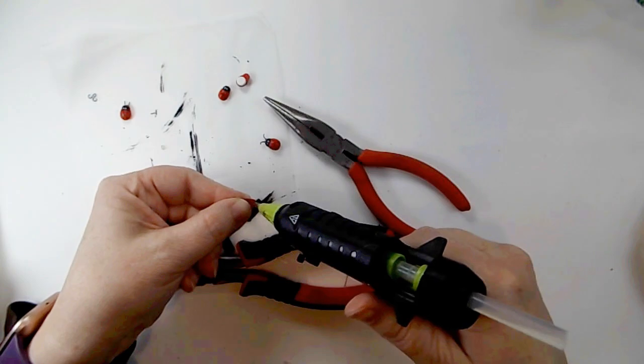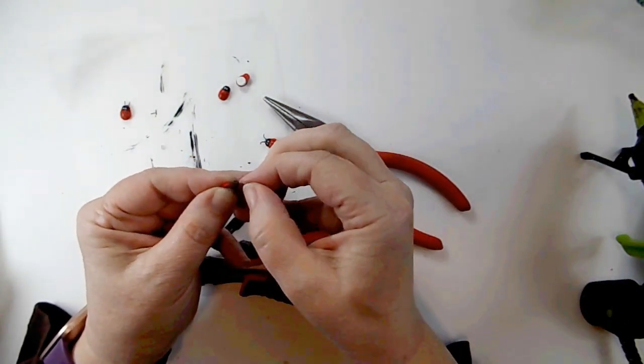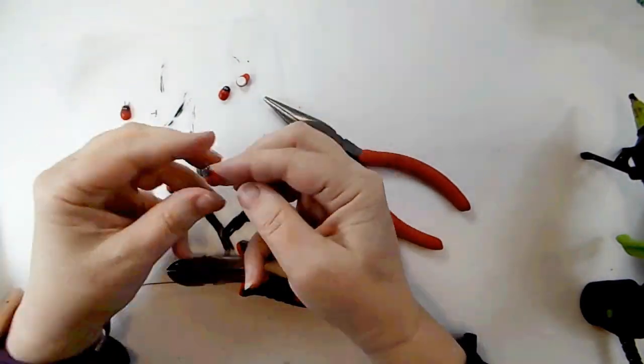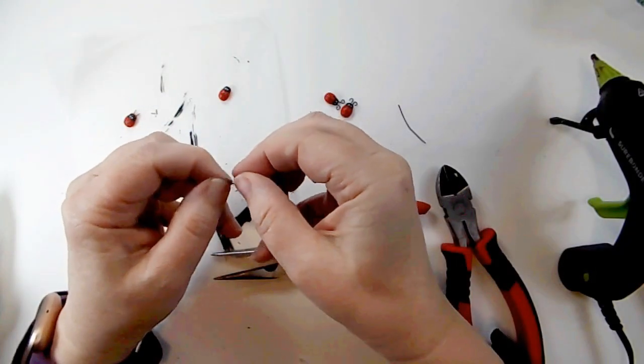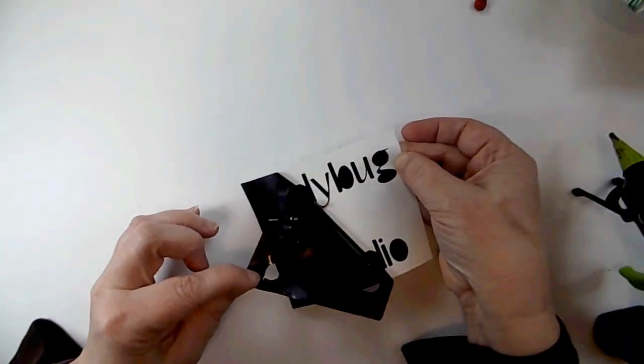It jumped right out of my hand. A little bit of hot glue will attach these antennas with no problem. So I made them just like this and I made a couple extra for another DIY that you'll see a little bit later.